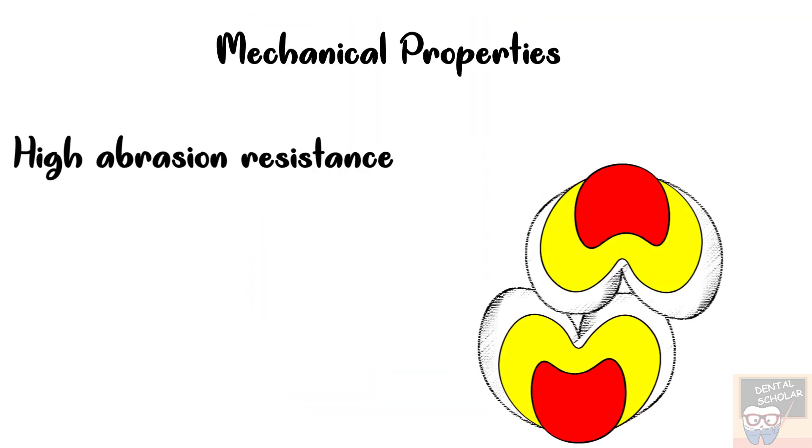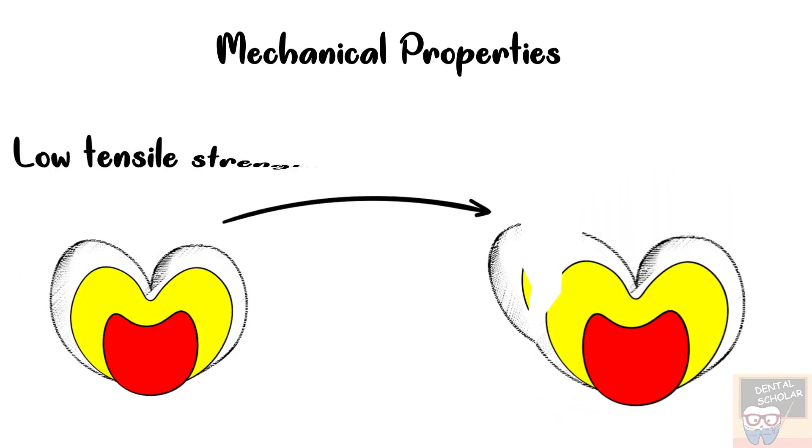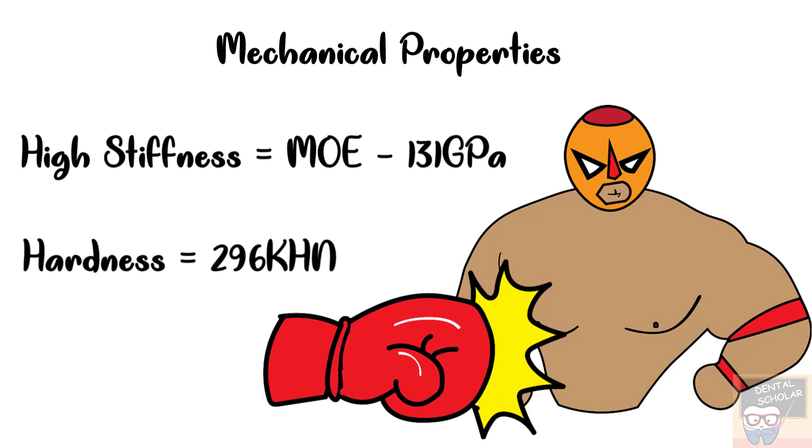Let's now begin with mechanical properties. Enamel has high abrasion resistance so that the wear of enamel in function is slow. Enamel has low tensile strength that is about 46 MPa. Because of this, enamel may fracture under lateral or tensile forces. So we can say that enamel is brittle. Enamel has a high modulus of plasticity about 131 GPa, so enamel has high stiffness.